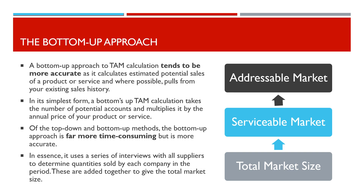A bottom-up approach to TAM calculation tends to be more accurate, as it calculates estimated potential sales of a product or service, and where possible, pulls from your existing sales history. In its simplest form, a bottom-up TAM calculation takes the number of potential accounts and multiplies it by the annual price of your product or service. Of the two methods, the bottom-up approach is far more time-consuming, but is more accurate.